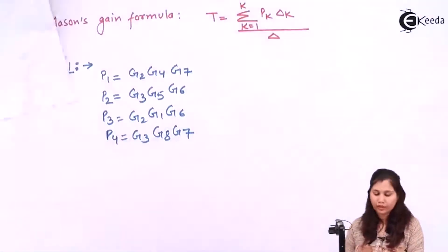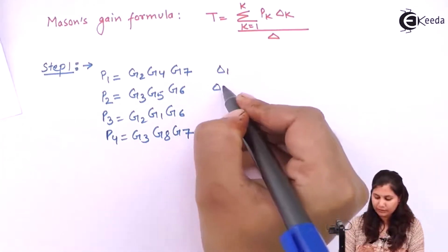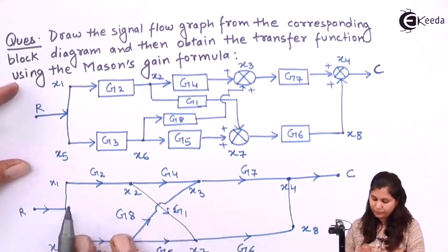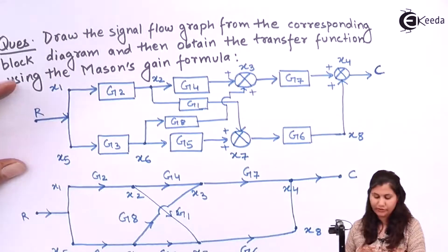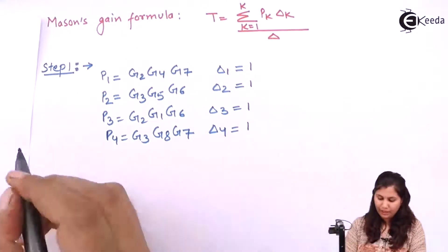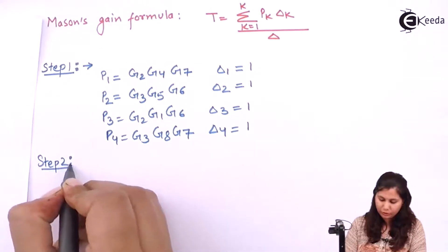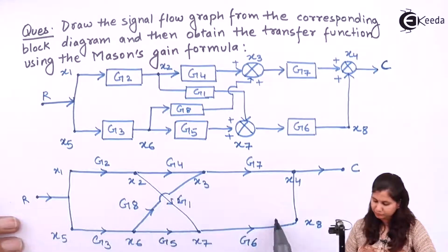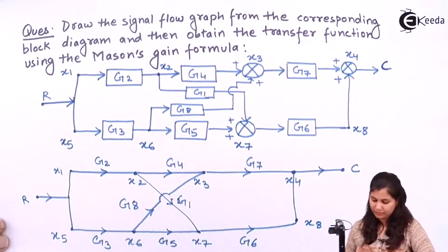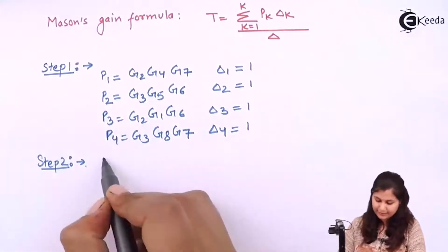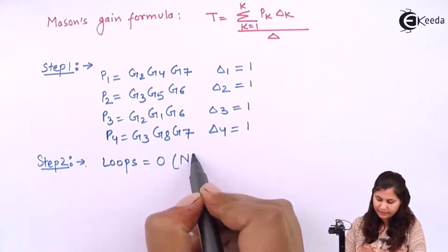For these four forward paths we have to find Δ1, Δ2, Δ3, and Δ4. For each, we check if there is any loop not touching the forward path — there are none. So Δ1, Δ2, Δ3, and Δ4 are all equal to 1. Step 2 is to find out the loops. There are no loops in this system because all the arrows are in the forward direction — no arrow is in the backward direction. So there are zero loops.